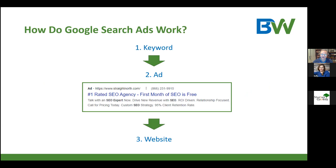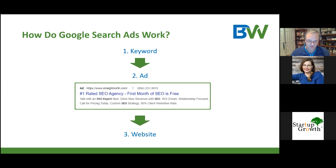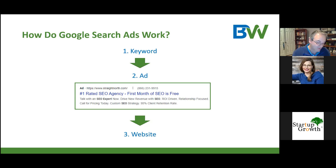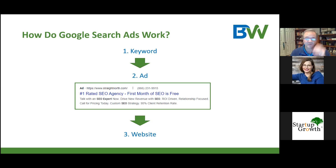How do Google search ads work? This is a really simplified explanation. You type some keywords into the Google search bar — like 'productivity software.' Once you do that, an ad appears, and when people click on those ads, they go to your website. You establish some keywords, show people who are looking for those keywords some ads, and send them to your website to hopefully complete a transaction or become a lead.